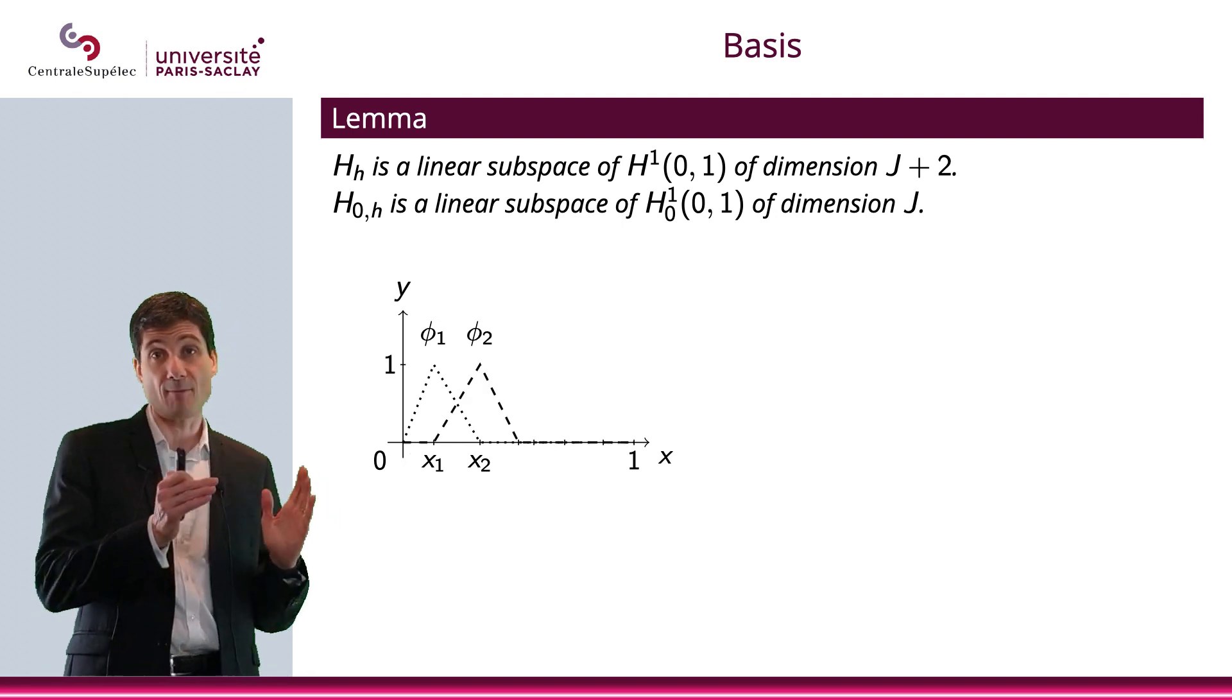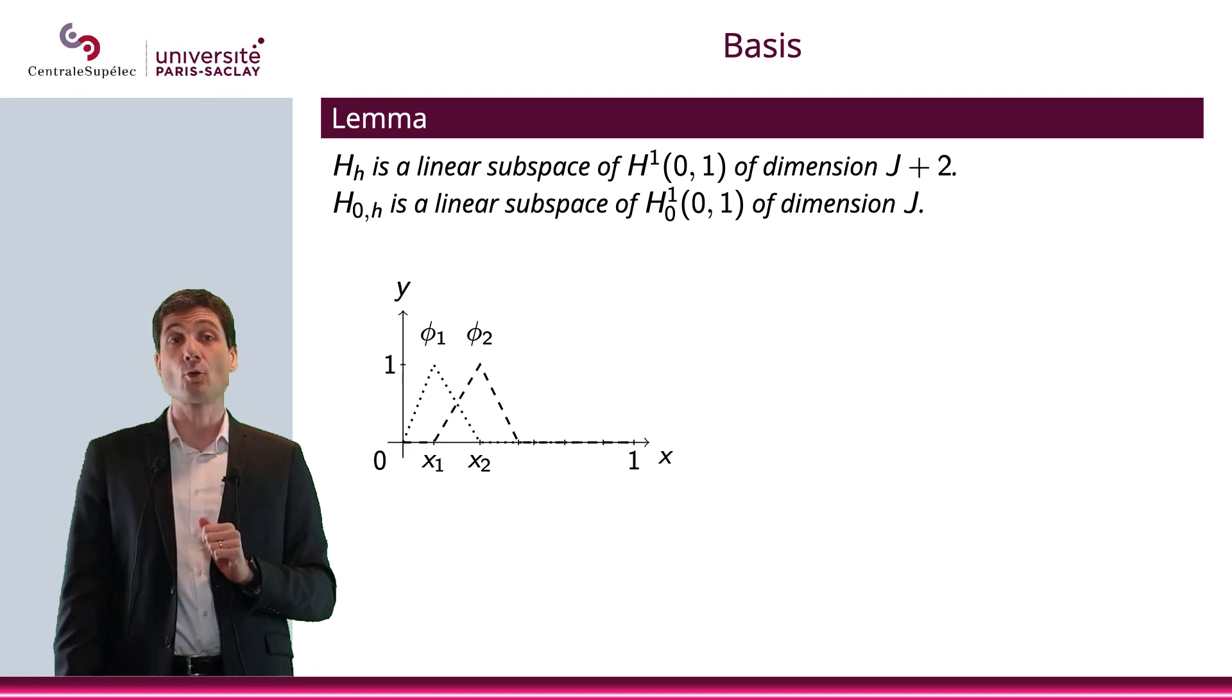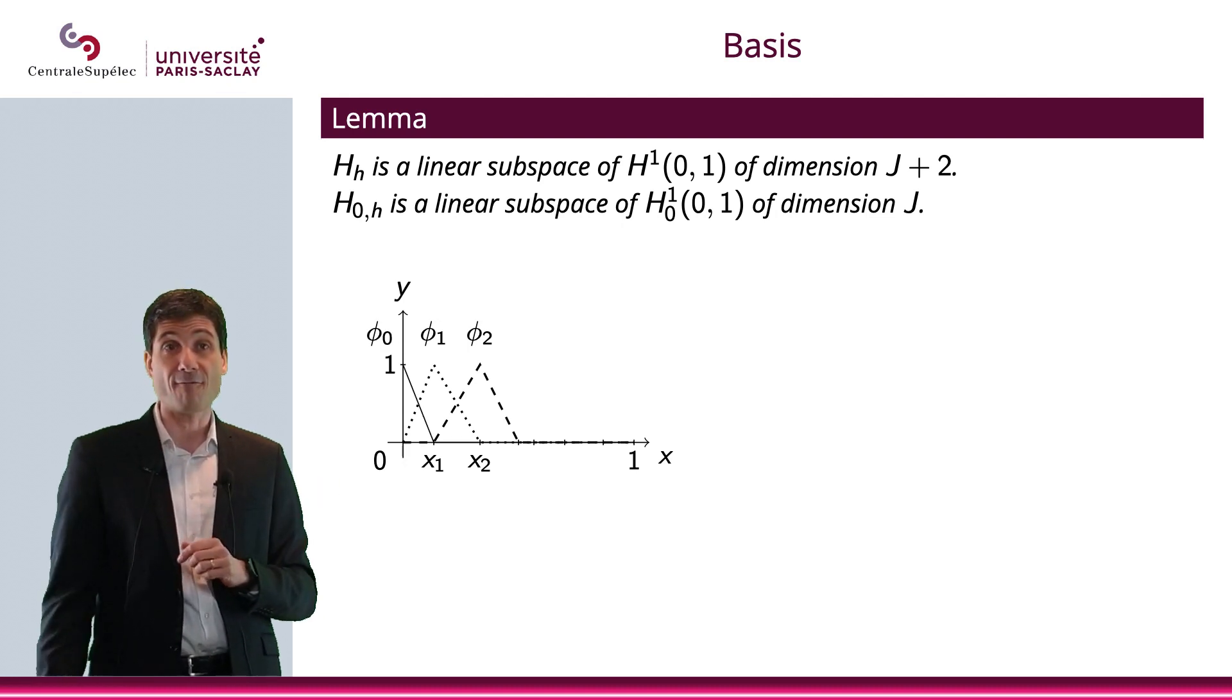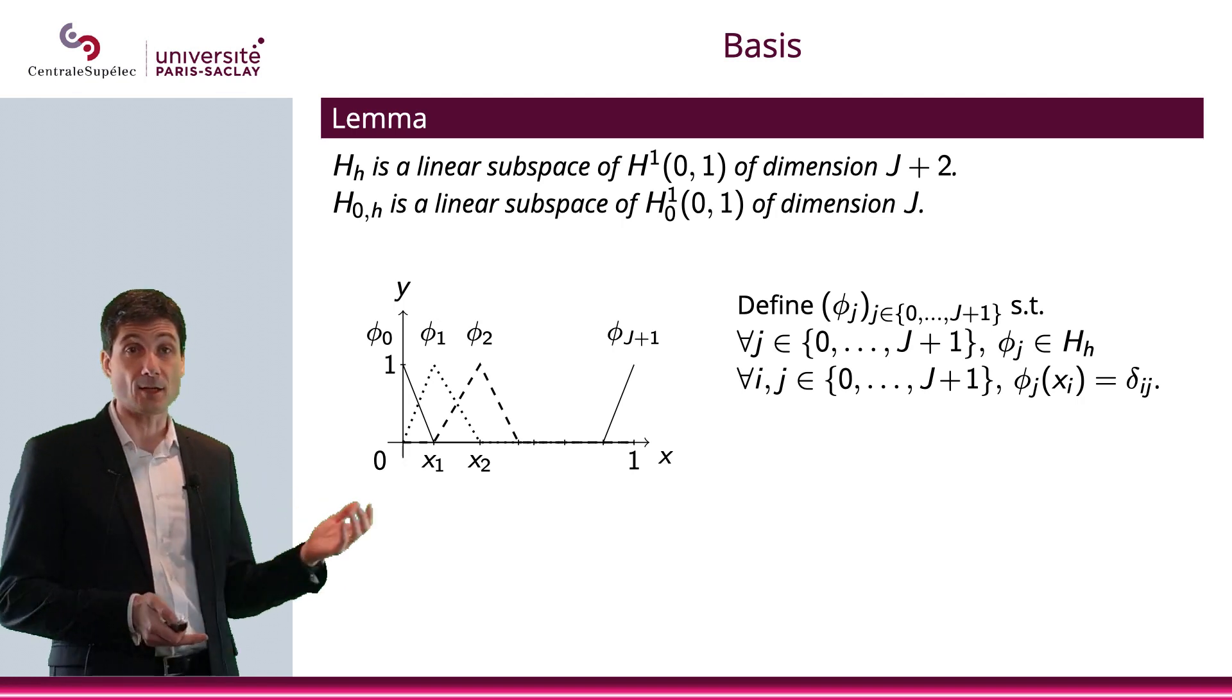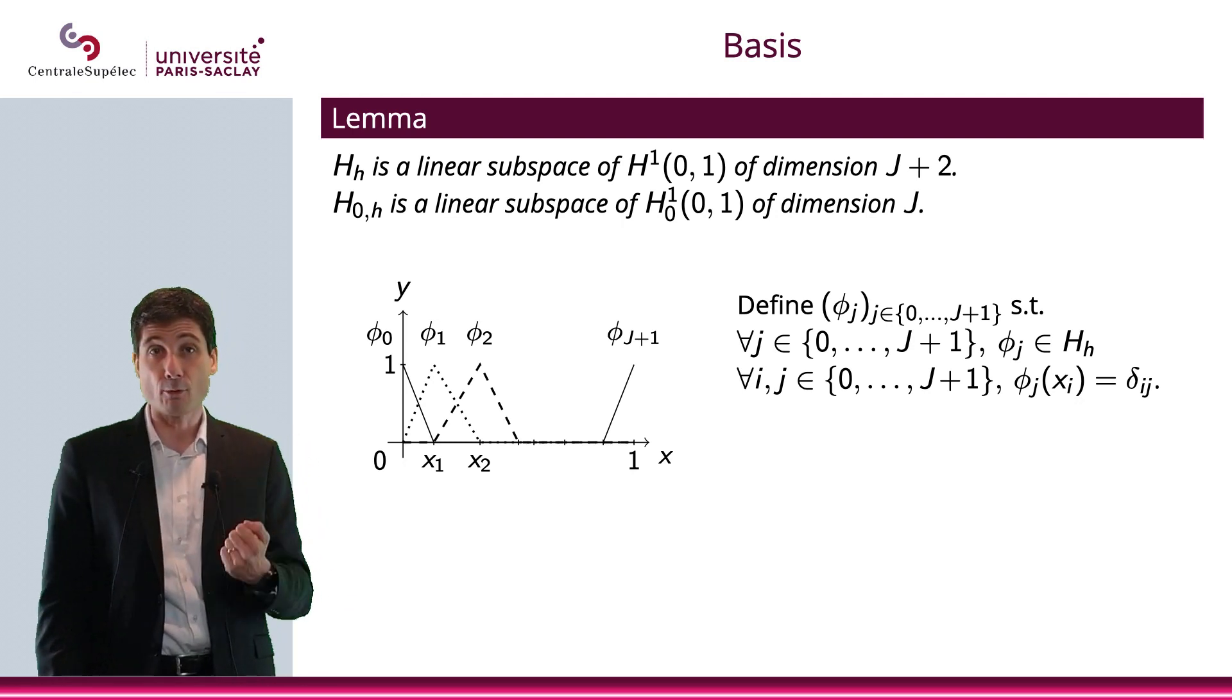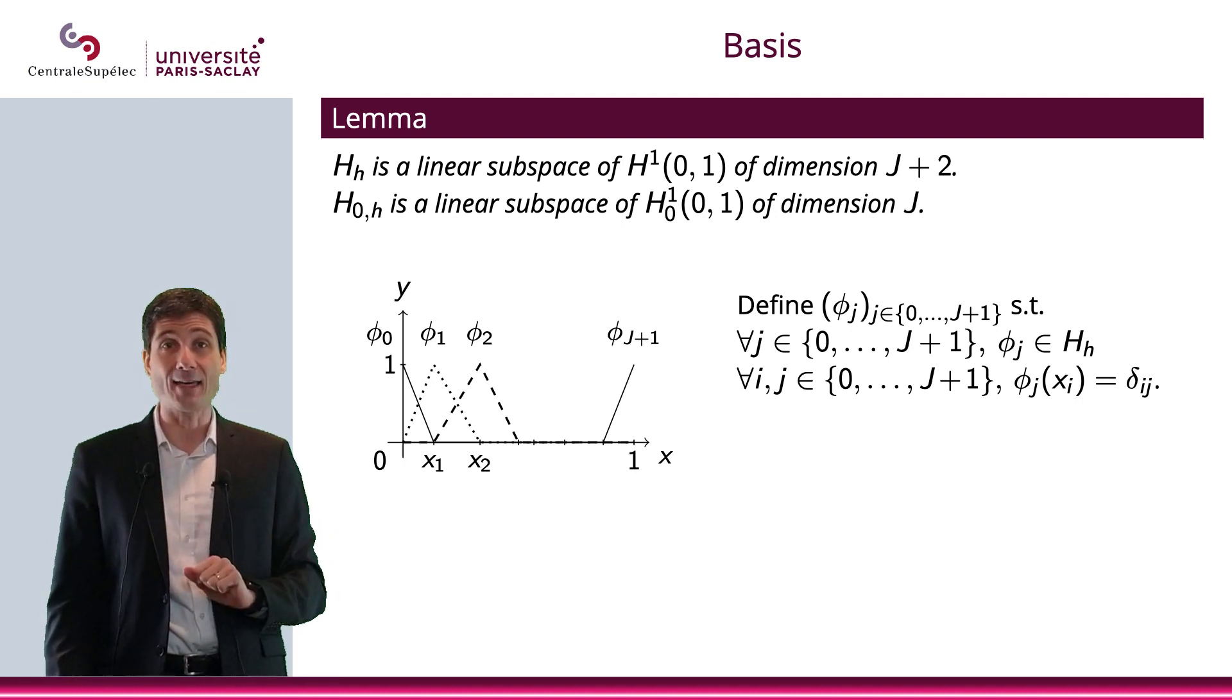φ_2 will be the same function somehow, but shifted by h. So it is equal to 0 all the way to x_1. Then it goes up with a slope 1/h, which is 1 at x_2. And then it goes down from x_2 all the way to x_3, with obviously a slope which is minus 1/h. And we can keep going this way. So I can define φ_1 to φ_J. And at both ends, I can define φ_0 simply as this hat function, but only half of the hat. And φ_{J+1} also half of the hat.